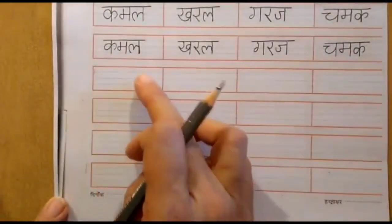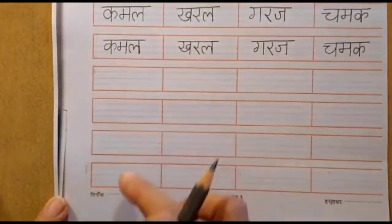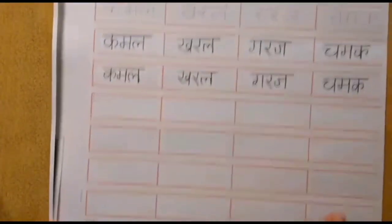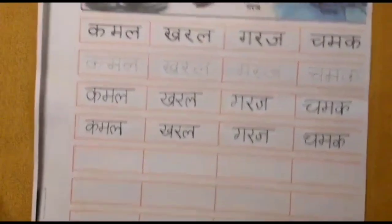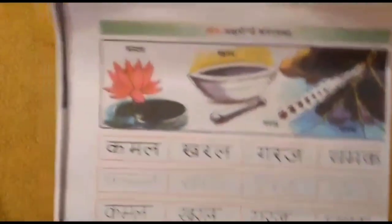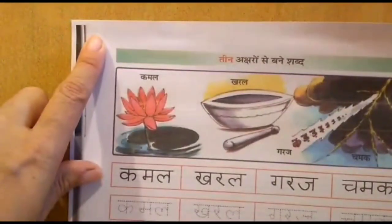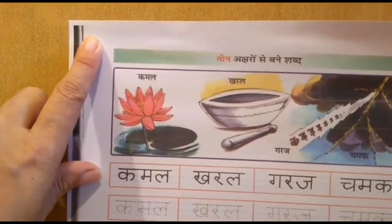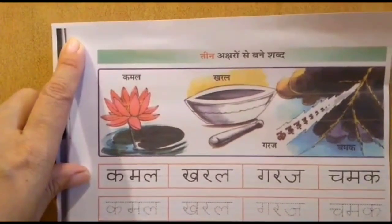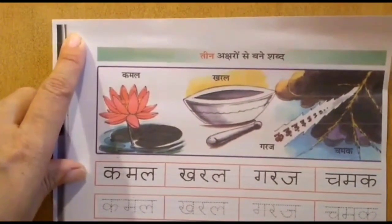You will complete all four lines remaining on the page. And after that, as usual, on the top left corner you will write today's date. Okay, children?